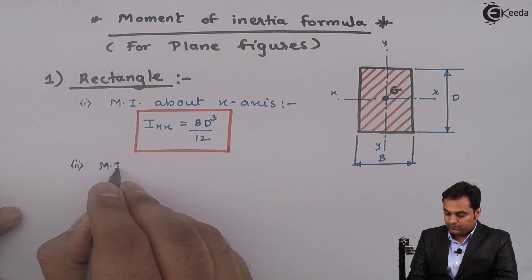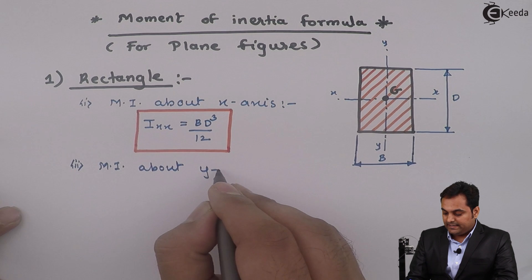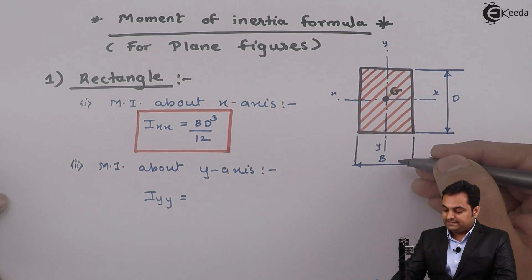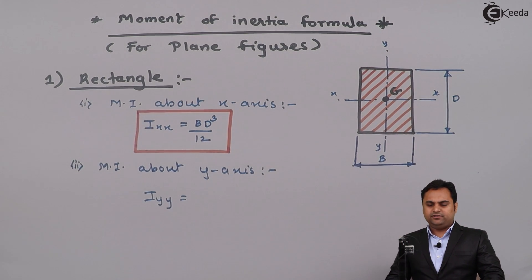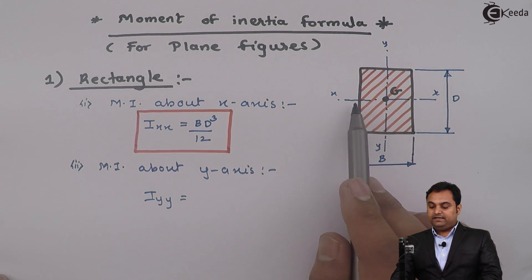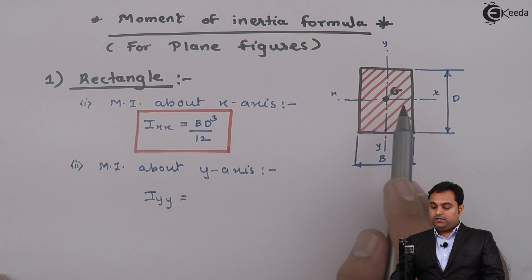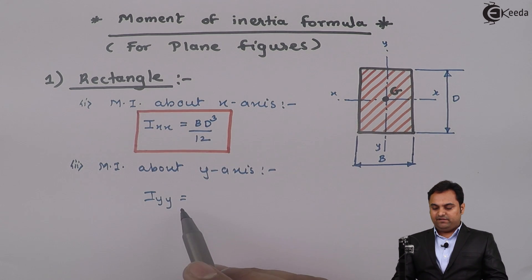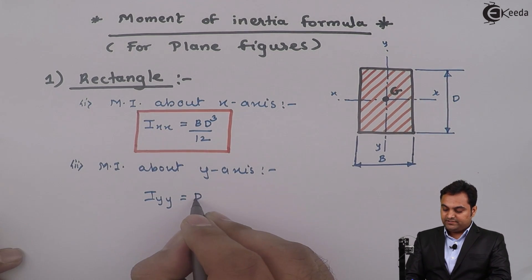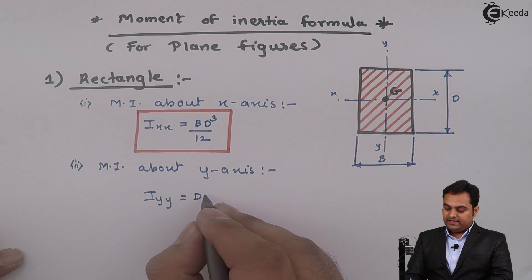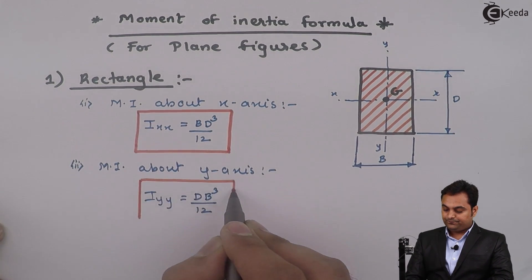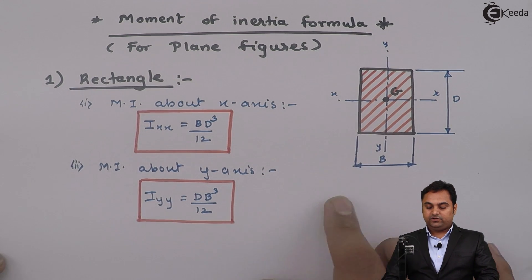MI about X-axis for a rectangle: I_XX is equal to BD³ by 12. For MI about Y-axis: I_YY is equal to DB³ by 12. One way to remember the formula is that if you are considering the X-axis, which is parallel to B, you take B directly and cube D. Similarly for I_YY, since it is parallel to D, you write D as it is and cube B. This is the MI of a rectangle.